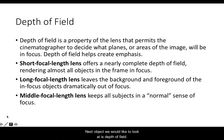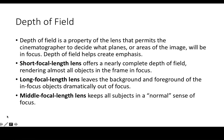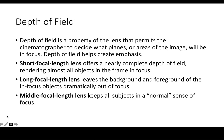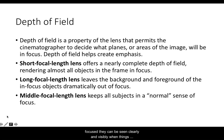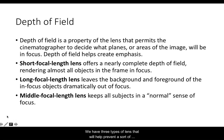The next element to look at is depth of field. Along with lighting, depth of field is one of the two major elements of cinematography I want you to focus on as you watch the film. Depth of field is the property of the lens that permits the cinematographer to decide what planes or areas of the image will be in focus. Depth of field helps create emphasis. When things are focused, they can be seen clearly; when things are out of focus, they are blurry. We have three types of lens that will help present depth of field, and then we'll look at one special technique in a moment.